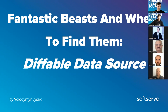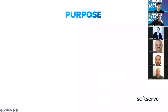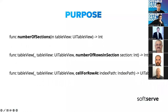Let's run quickly through the purpose of this presentation. The usage of diffable data source is not as common as well-known ordinary data sources. During iOS development, when we need to create a table or collection view, most of us will probably pick up the ordinary way of doing things: number of sections, number of rows in the section, cell for row at index path — without considering other alternatives.